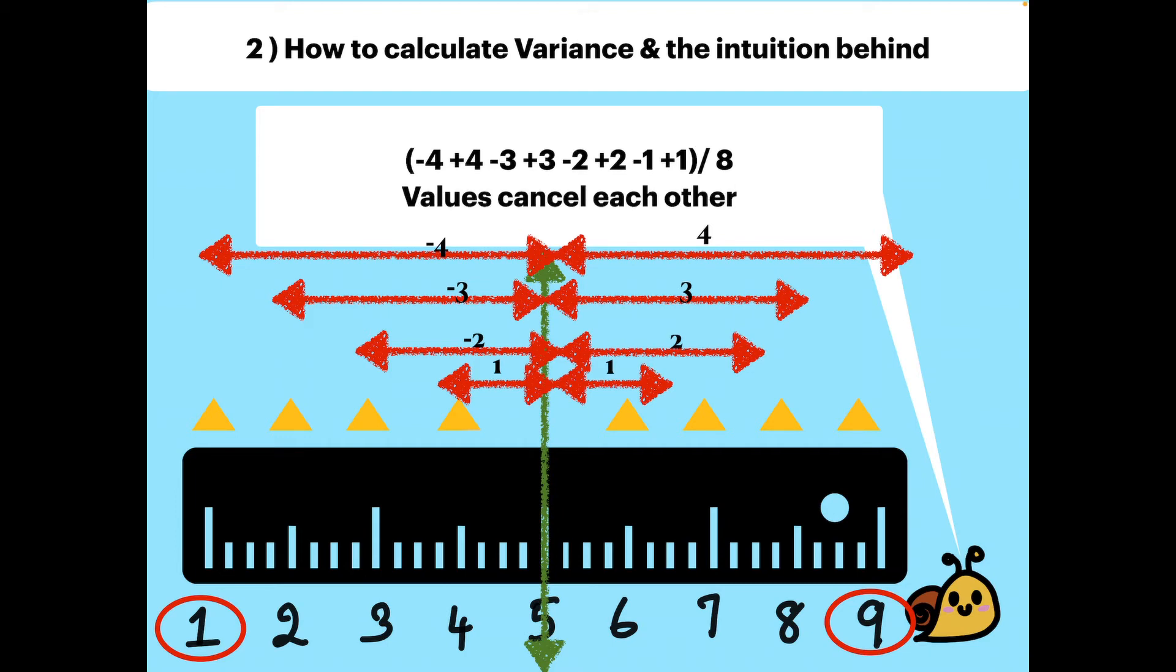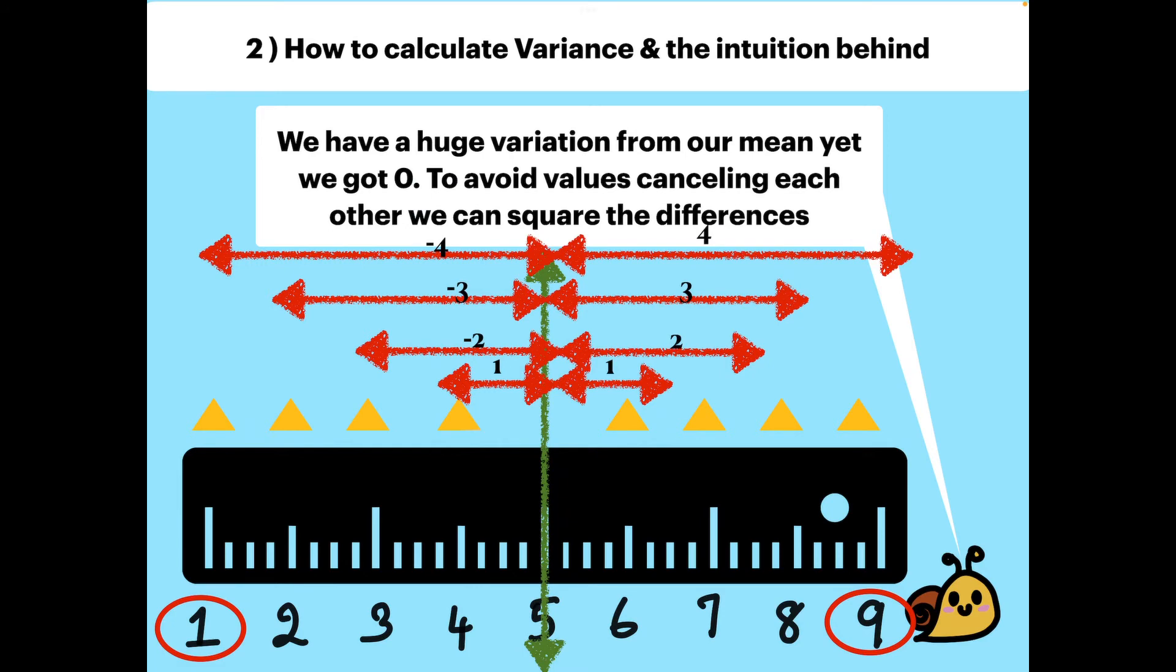Since this is positive and negative values, they cancel each other and give us 0 divided by 8, which is 0. We have a huge variation from our mean, yet we got 0.